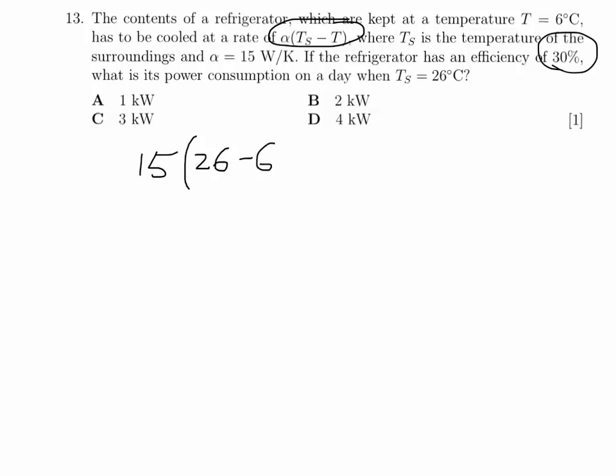Alpha we're told is 15, and our temperature of the surroundings is 26 degrees Celsius, and the temperature that we want to get our food to is 6 degrees Celsius.